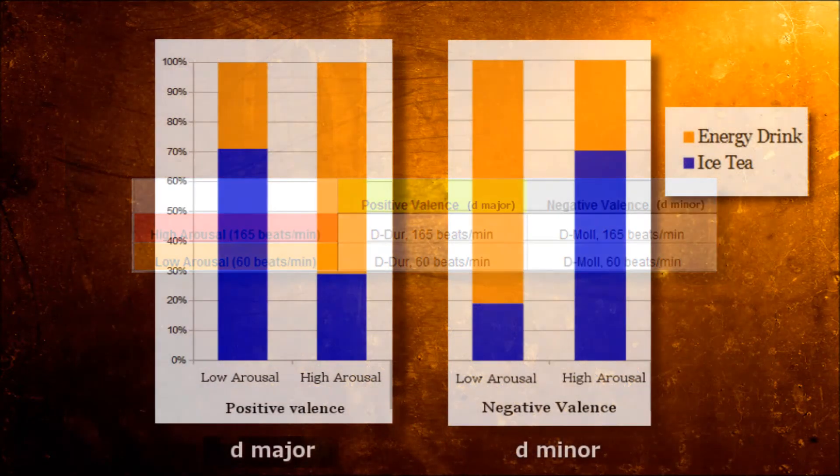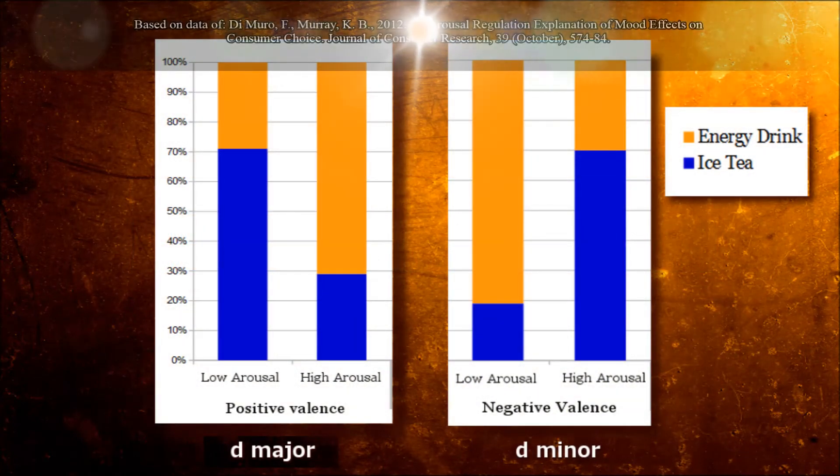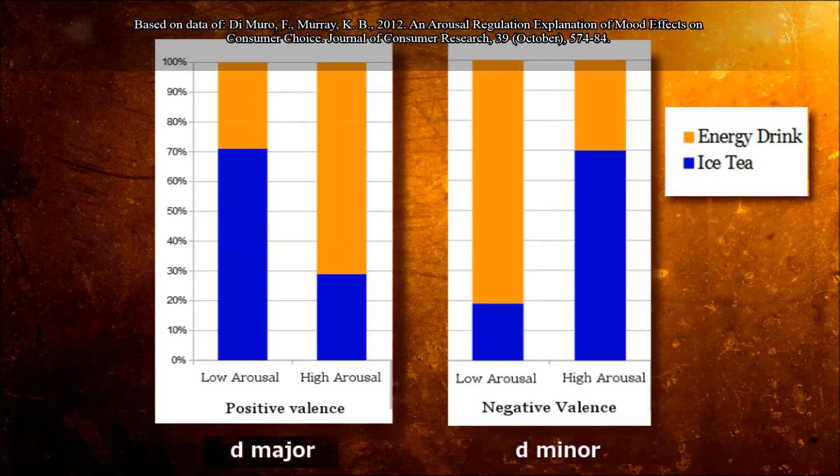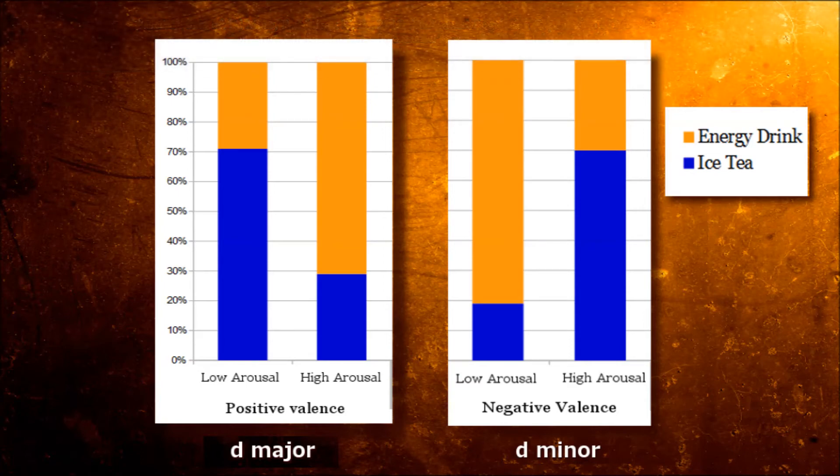And it turned out that the different modalities of the music indeed had an influence on the choice of drink. When participants were in a good mood with high arousal, they chose the drink that fitted their state. They chose the energy drink. When they were in good mood and relaxed, they more often chose the iced tea.